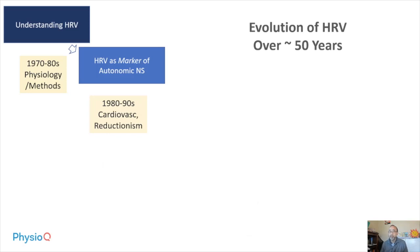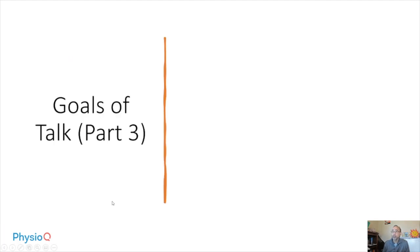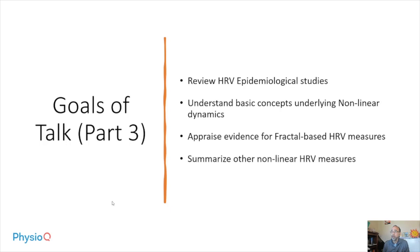Within this context, we move into the 1990s and 2000s, where epidemiology and nonlinear sciences came to the fore. Both these disciplines helped reframe HRV as a marker of body-wide function. The goals of this talk are to review HRV epidemiological studies, understand basic concepts underlying nonlinear dynamics, appraise evidence for fractal-based HRV measures, and summarize other nonlinear HRV measures.